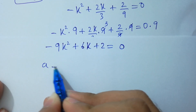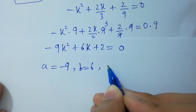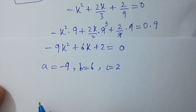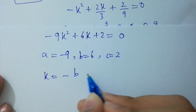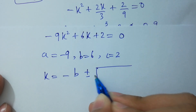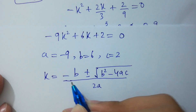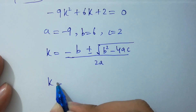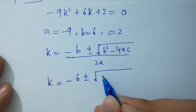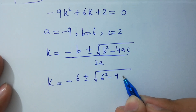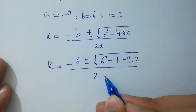Apply now the quadratic formula: k equals minus b plus or minus square root of b squared minus 4ac, over 2a. k equals minus 6 plus or minus square root of 6 squared minus 4 times minus 9 times 2, over 2 times minus 9.